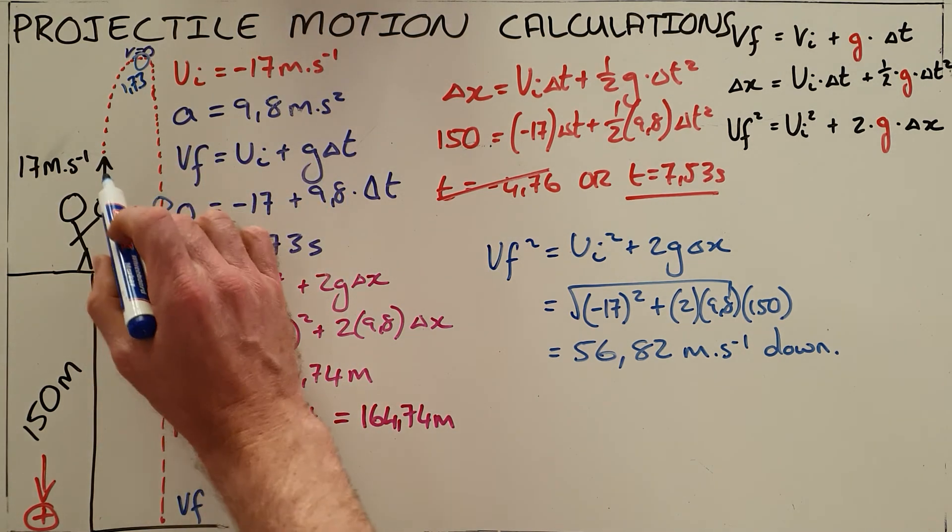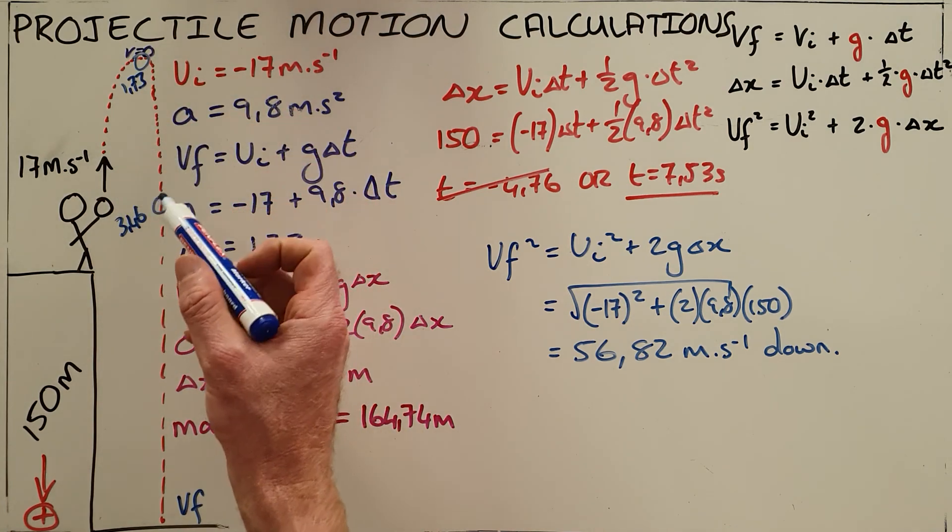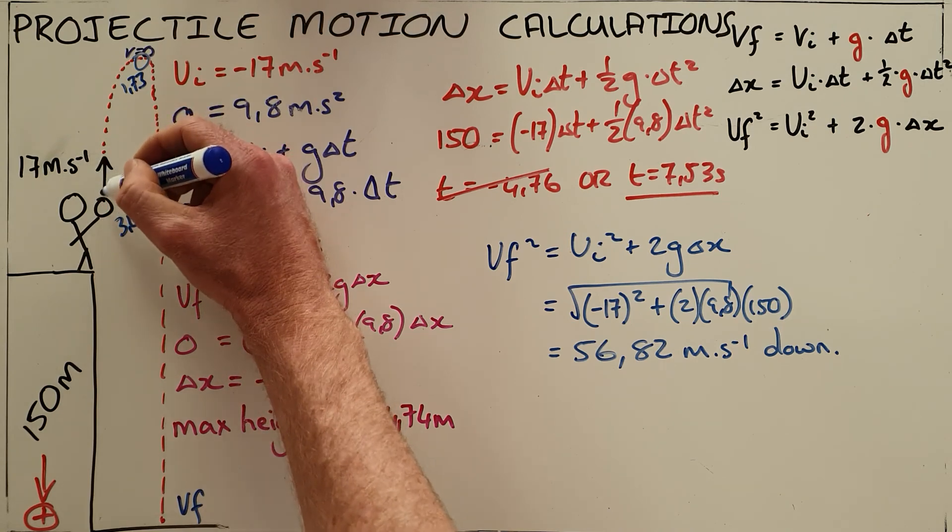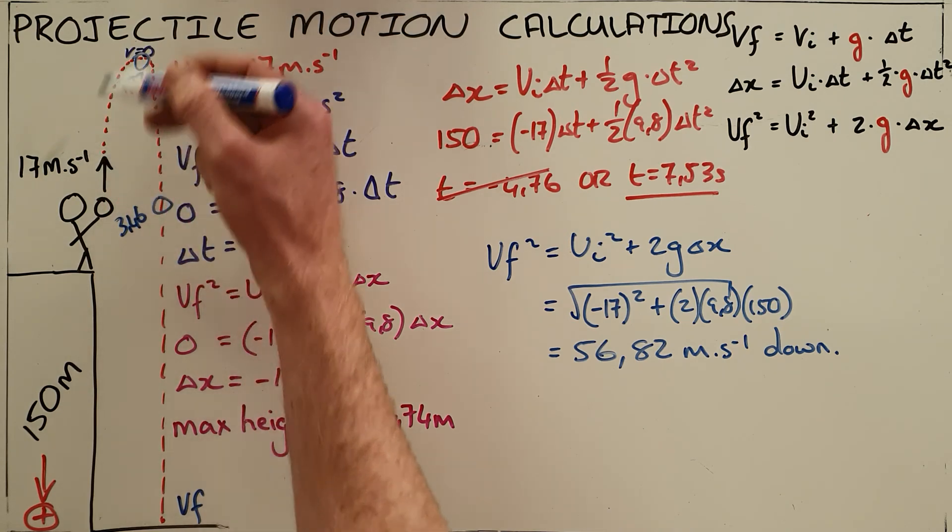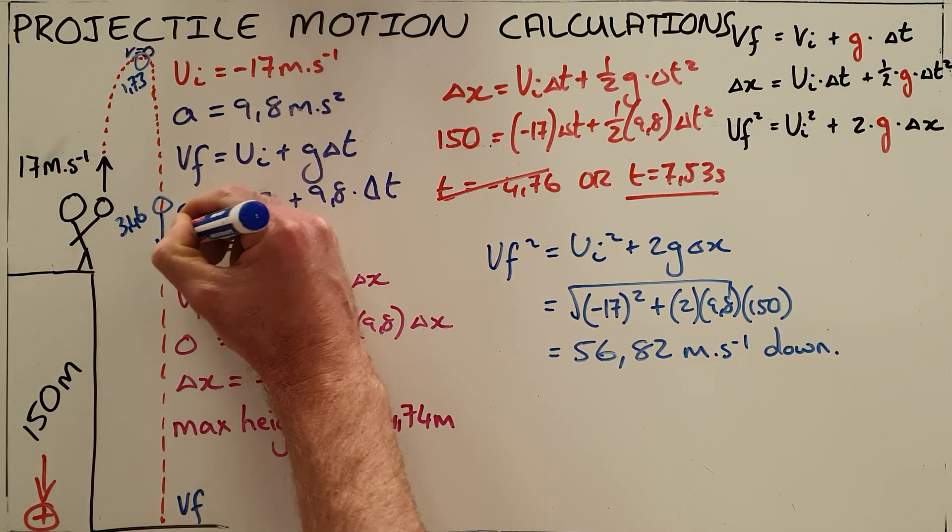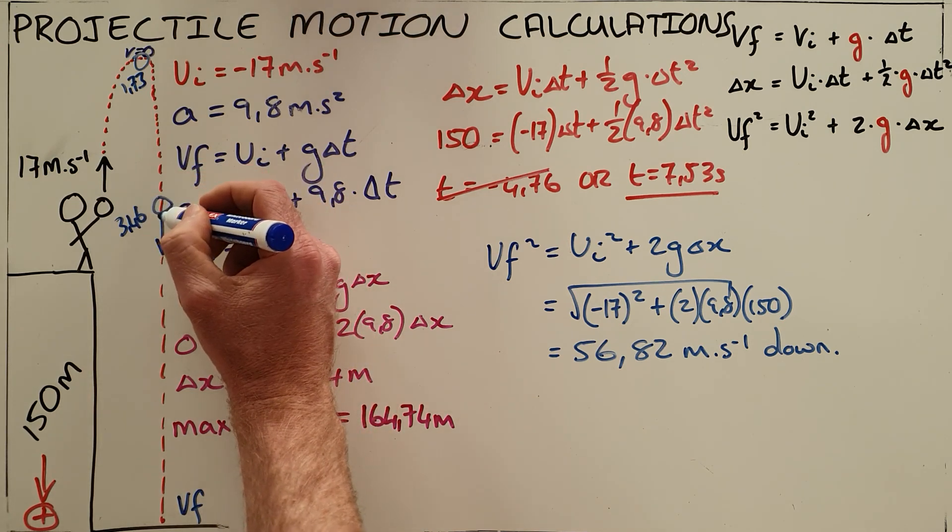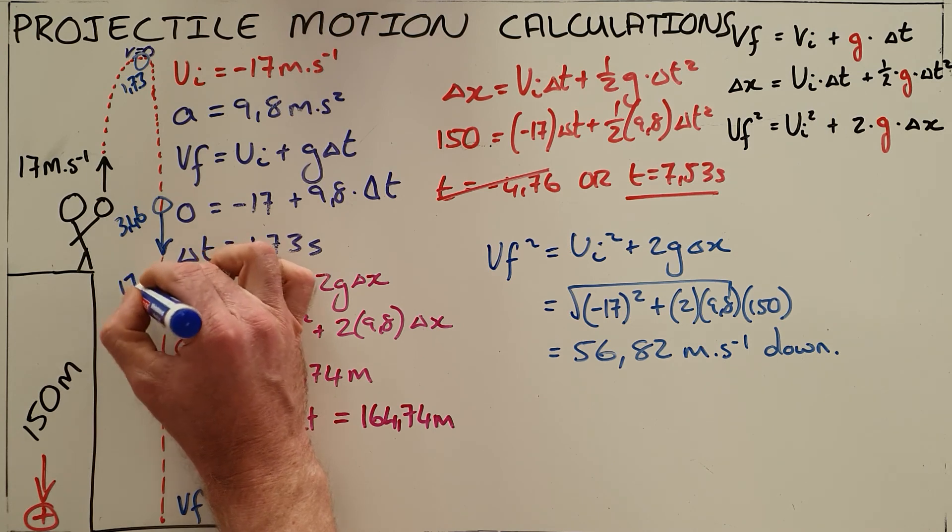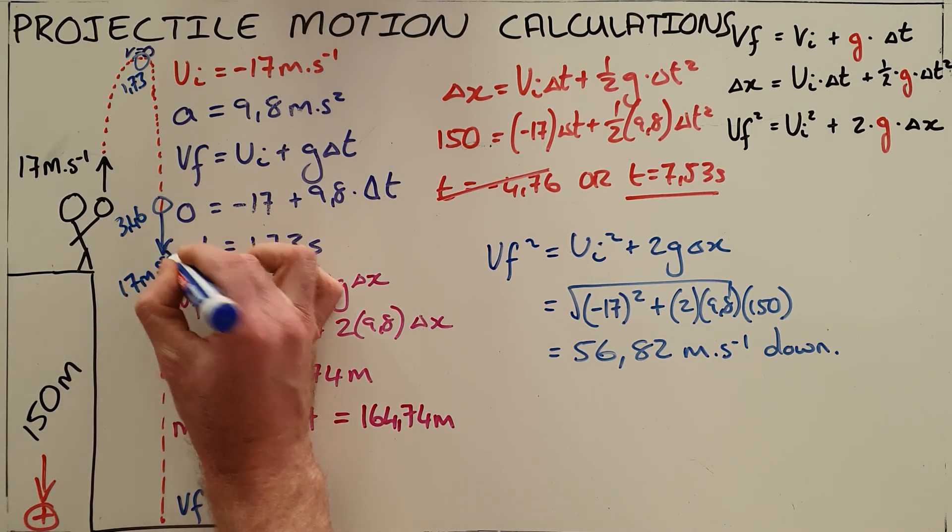And finally, if the object's initial velocity is 17 meters per second upward, we can safely assume that when the object returns to its starting point, its velocity at that point will be 17 meters per second downward.